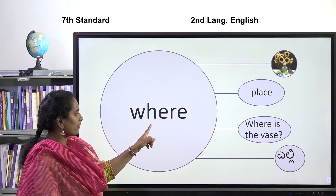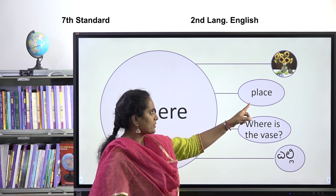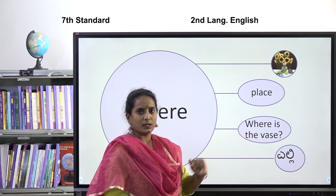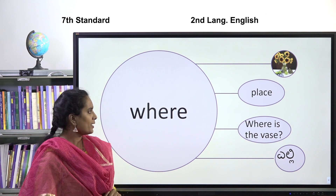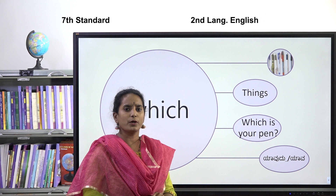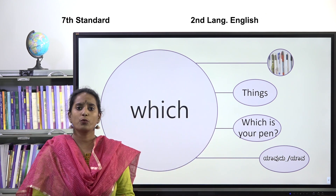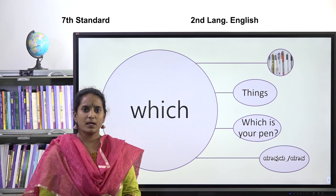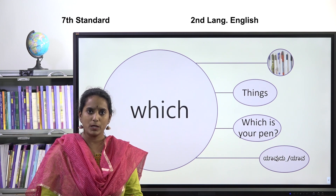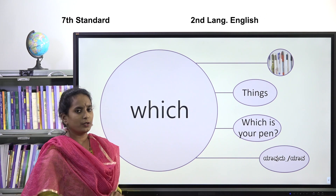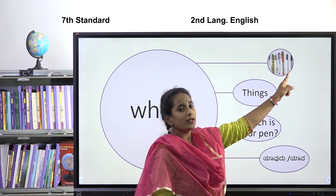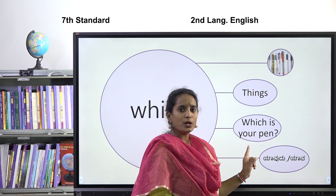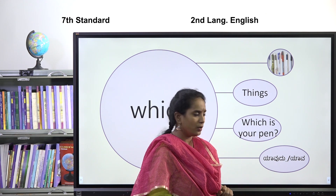Next word: 'where.' We use the question word 'where' for place. For example, if there is a vase on a table, the question is: Where is the vase? In Kannada: elli. Next word: 'which.' The question word 'which' is used for things when there is more than one option — for example, two pens or more — and you want to know which one specifically. Example: Which is your pen? In Kannada: yaadudu or yaava.